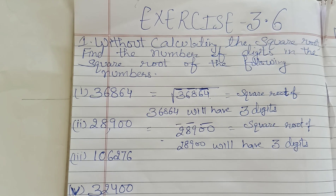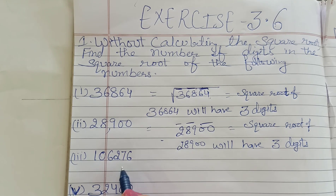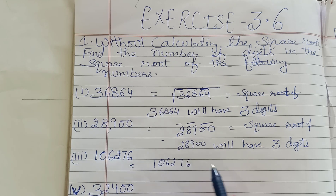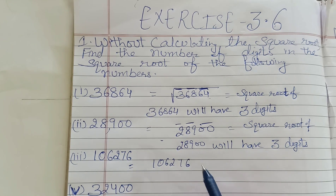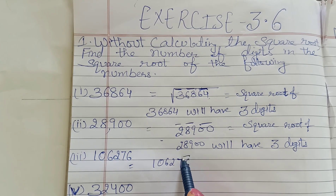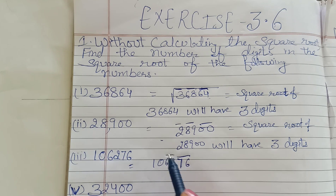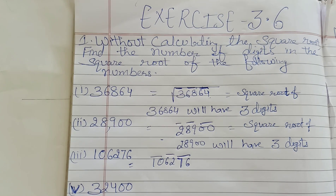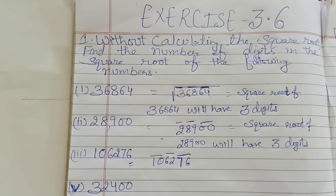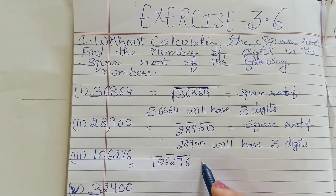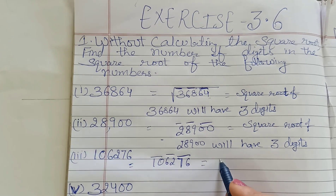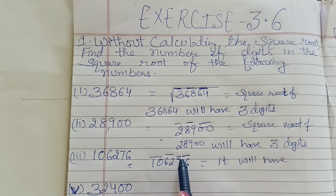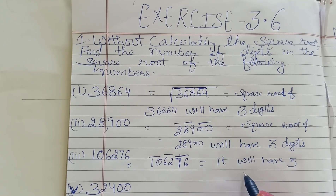Next number: 106276. Iska bhi karte hai. Bar — one bar, two bar, three. Always two numbers under one bar. Yahaan se start karna, last mein jitnay raayenge unpeh bar lagayenge. Kitnay bar aayenge? One, two, three. It will have three digits.